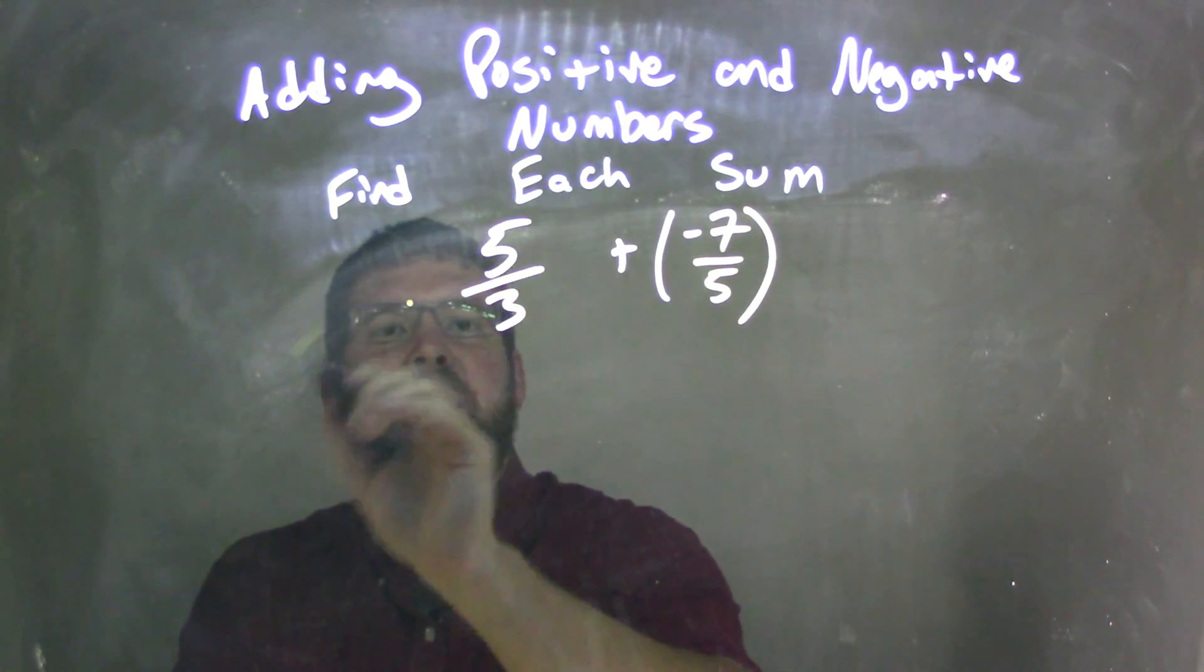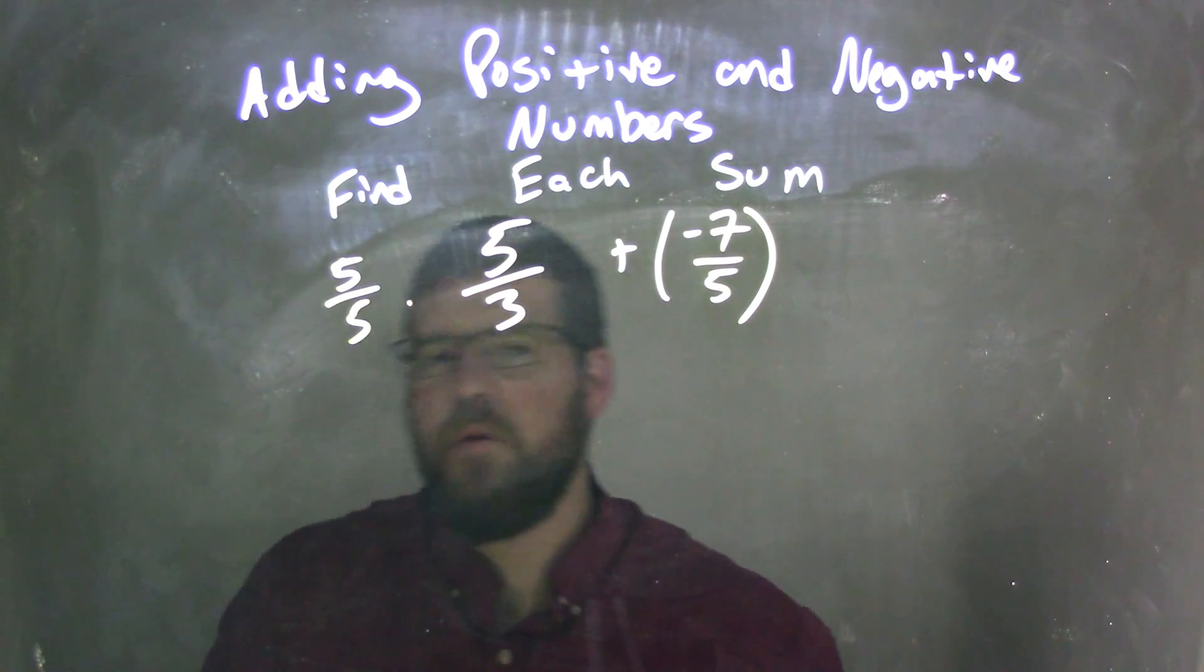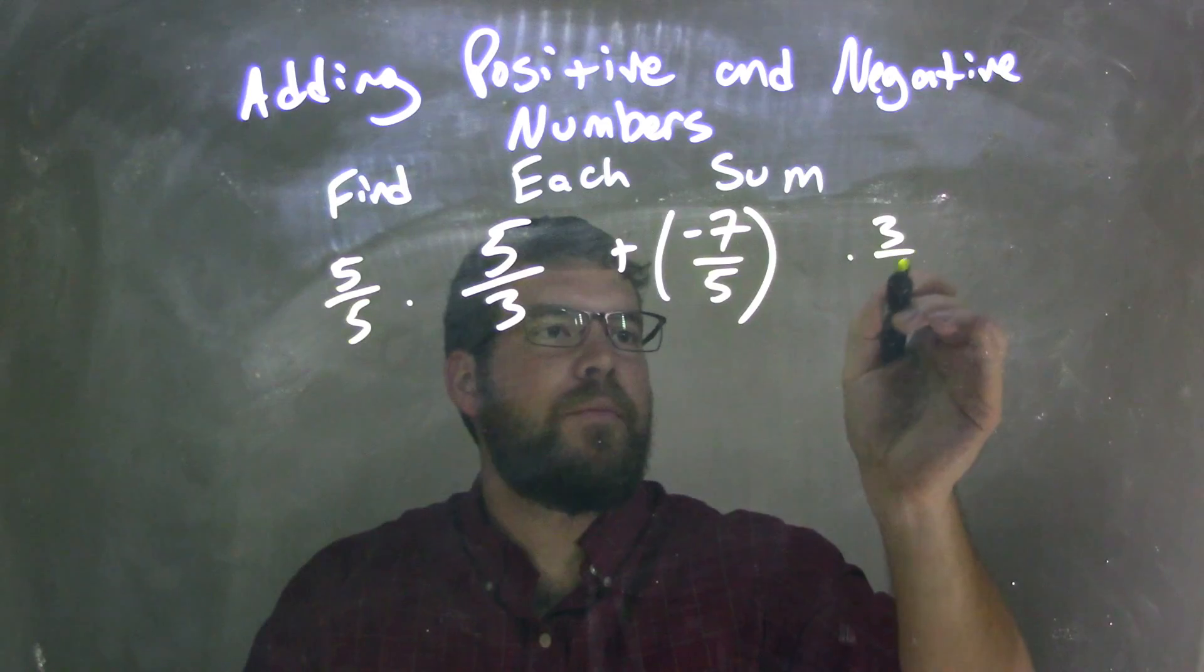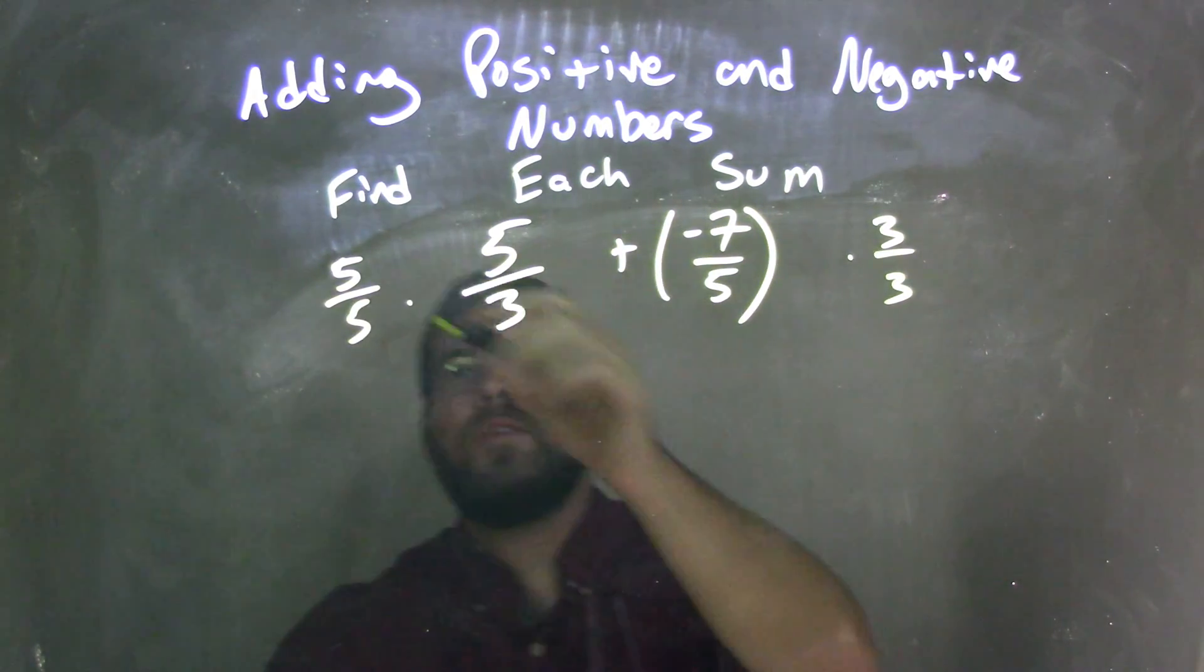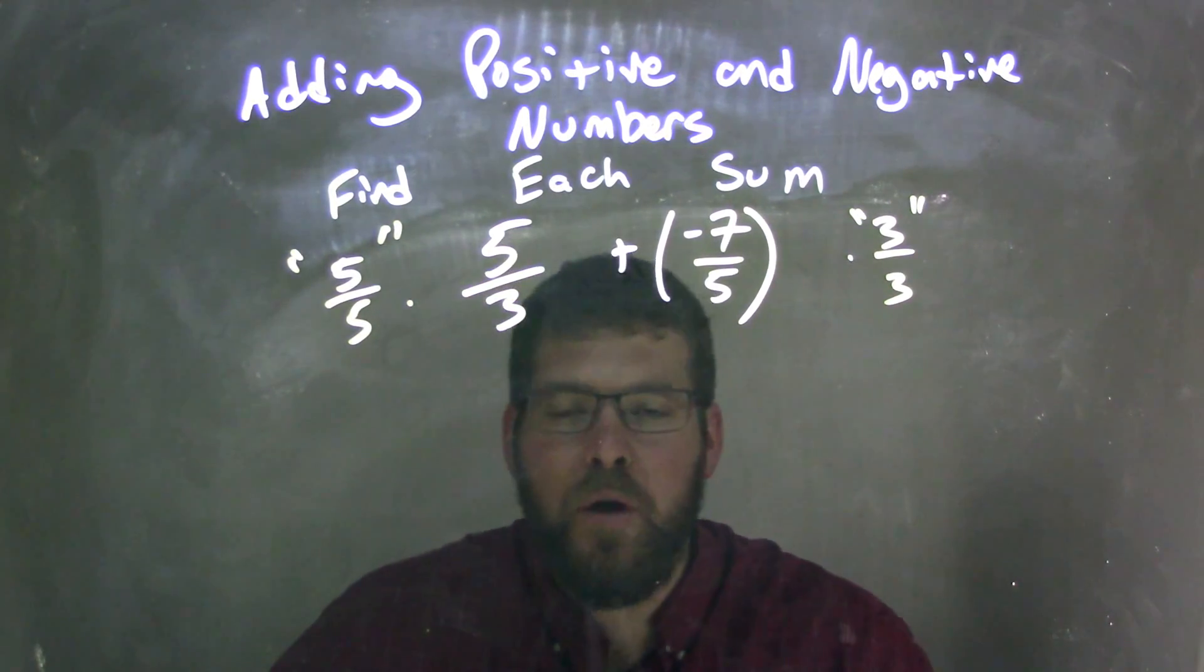What I'm going to do is take 5 thirds and multiply it by 5 fifths, because 5 over 5 is just 1. And I'm going to take this negative 7 fifths and multiply it by 3 thirds. Essentially, I'm just multiplying both sides by 1, and a number times 1 is itself.